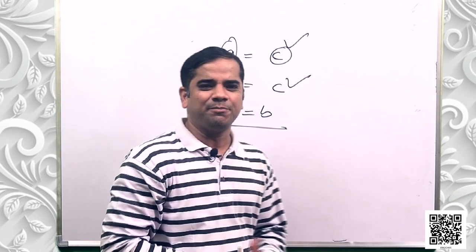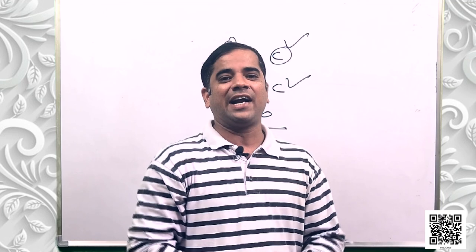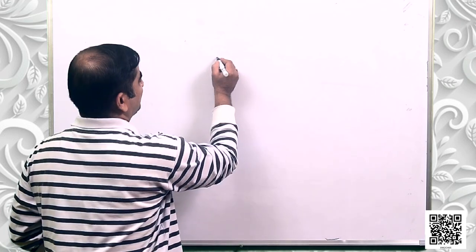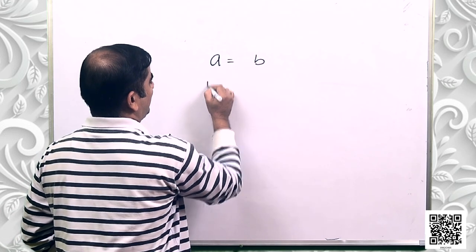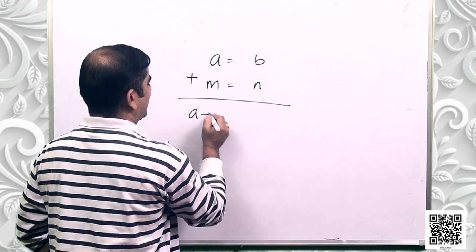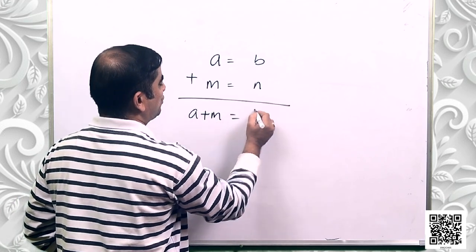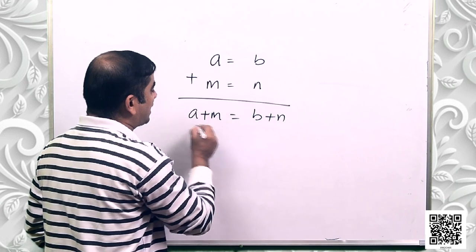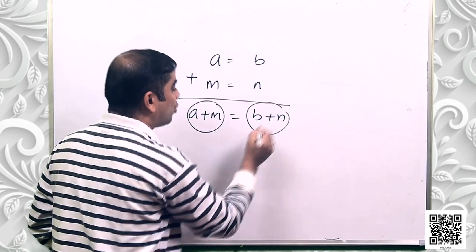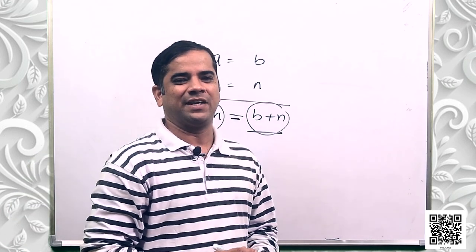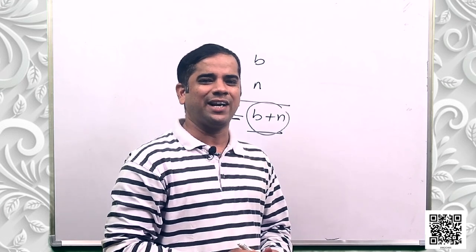The second axiom says that if equals are added to equals, the wholes are equal. For example, if A equals B and M equals N, then A plus M equals B plus N. So when equals are added, the wholes are also equal to each other.